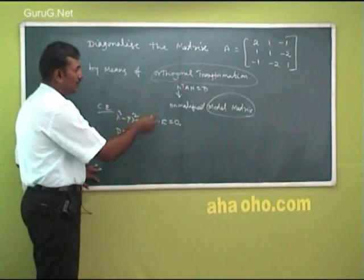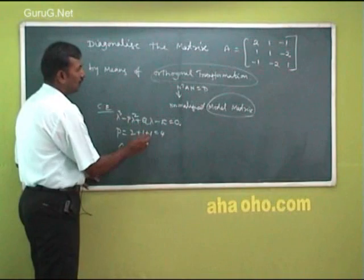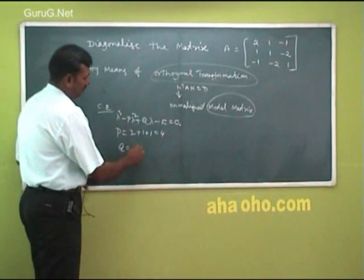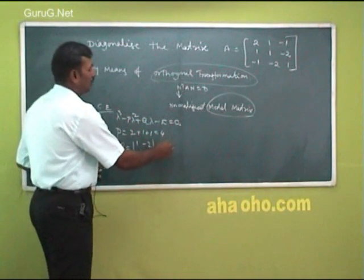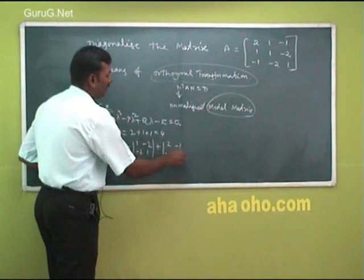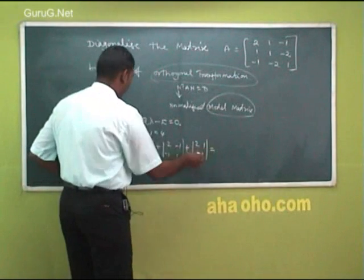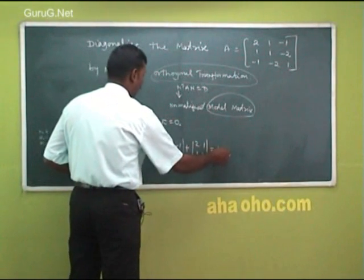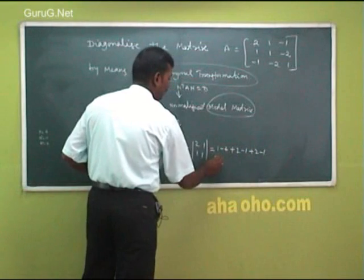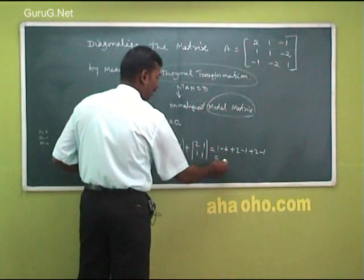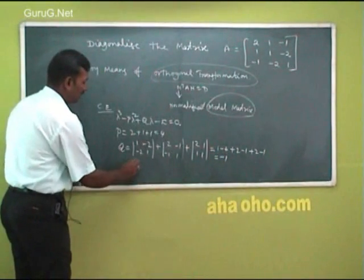What is P now? The sum of the diagonal elements. So 2 plus 1 plus 1 is equal to 4. Then Q is equal to the sum of the minors of the diagonal elements: so |1, -2; -2, 1| plus |2, -1; -1, 1| plus |2, 1; 1, 1|. This is equal to (1-4) + (2-1) + (2-1), which equals minus 3 plus 1 plus 1, giving Q equal to minus 1. Then R equals the determinant of A.